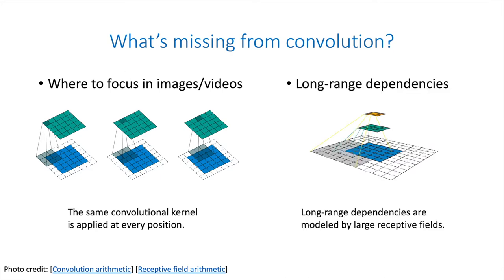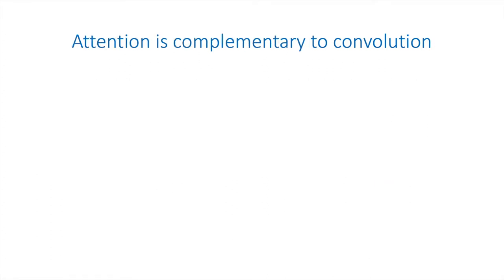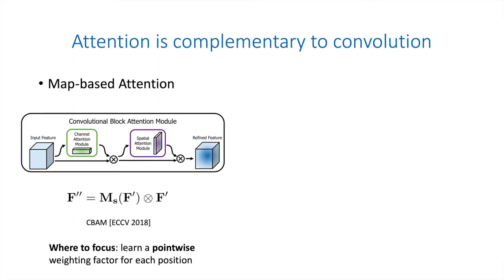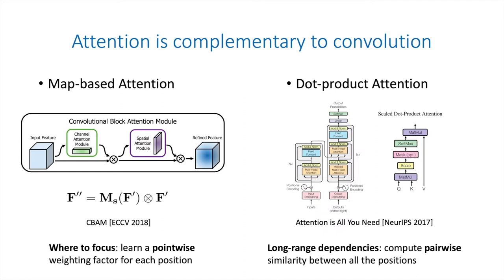Second, convolution is unsuitable for modeling long-range dependencies, since it only operates on a small and local neighborhood. Fortunately, both limitations can be alleviated by attention operations. Map-based attention explicitly models where to focus on by learning a point-wise weighting factor for each position. To model long-range dependencies, dot-product attention computes a pairwise similarity matrix between all the positions and reweights the feature map based on the similarity matrix.